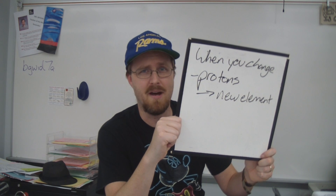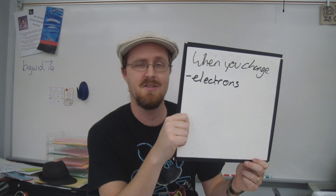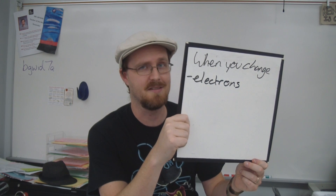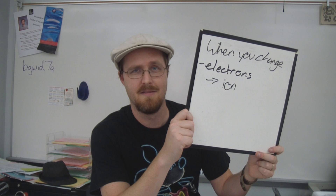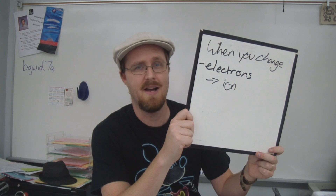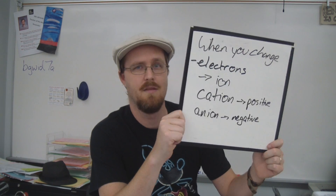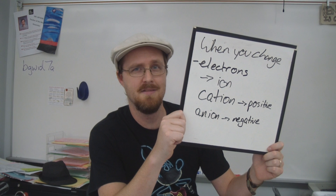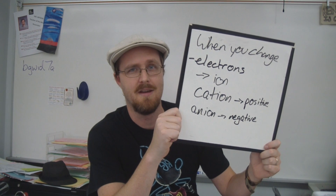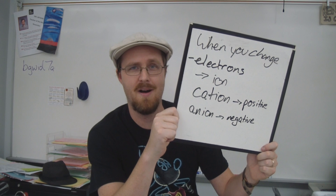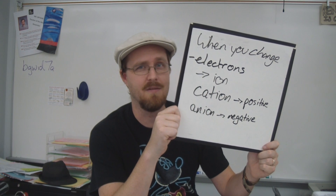But what about the electrons? When you change the electrons, you get what we call an ion. And there are actually two kinds of ions: cations and anions. The cations are positive, whereas the anions are negative.